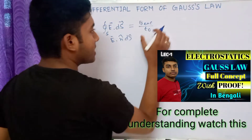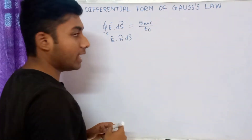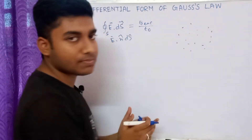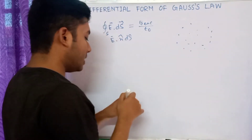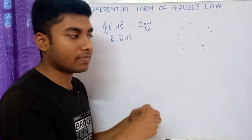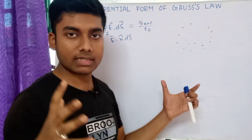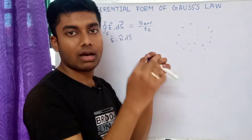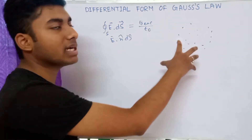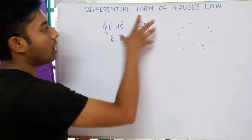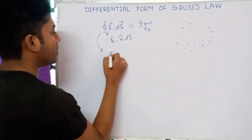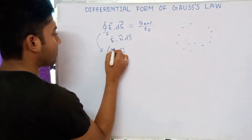Here, Q enclosed means the charge enclosed. So if we have an arbitrary distribution of charges in a volume of 3D space — charges at different positions — then for this volume charge distribution we have to find the differential form of Gauss's Law. We can write that the surface integral of E dot dS equals Q enclosed.